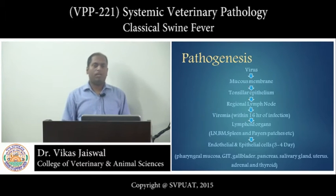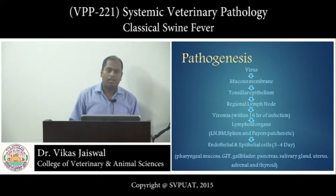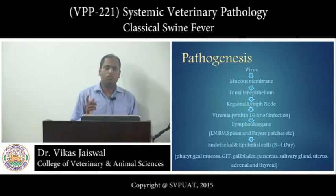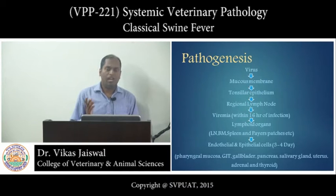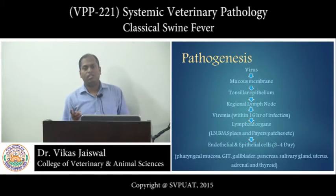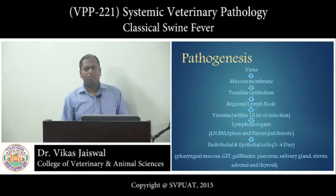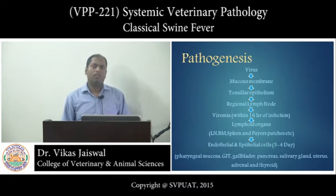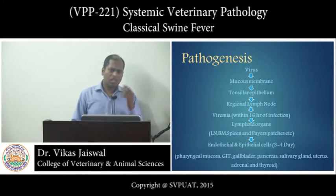Coming to pathogenesis — before pathogenesis, I want to tell you that characteristically this virus causes acute disease with high mortality and morbidity. Morbidity may reach 100% and mortality may reach 90%, and within 14 days of infection the animal may die, showing signs of anorexia, depression, fever, and leukopenia. If the animal survives more than 30 days, the infection may be categorized as persistent viral infection.